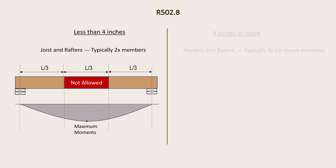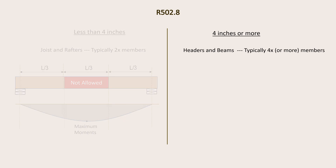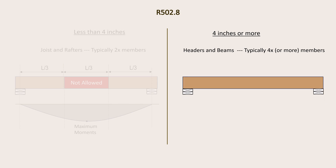While joists and rafters in conventional construction are typically 2 inches thick, beams are typically 4 inches or more in thickness. It is expected that members that are 4 inches or more in thickness are likely to be supporting higher uniform loads than members that are 2 inches in thickness. For members that are 4 inches or more in nominal thickness, the code does not permit notching on the tension side except at the supports.